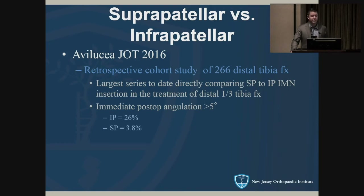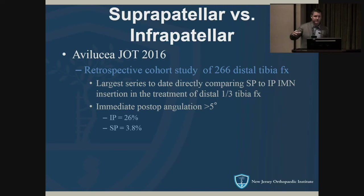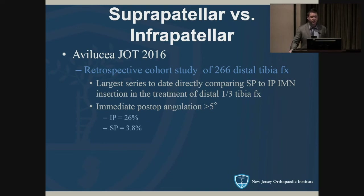A retrospective JOT study — the largest series to date — compared suprapatellar versus infrapatellar nailing. They found that infrapatellar nails had higher post-op malunion rates in distal third fractures. With infrapatellar nailing, you need an assistant holding the fracture reduced while you're reaming and placing the nail, and it's difficult to get X-rays. With the suprapatellar approach, the leg is flat on bone foam — it's much easier to maintain gentle traction and keep everything aligned during nailing.